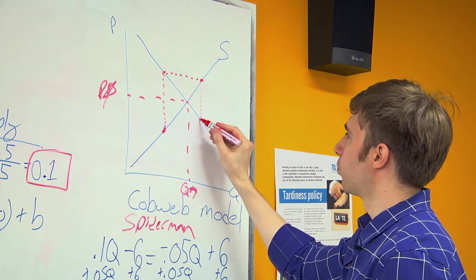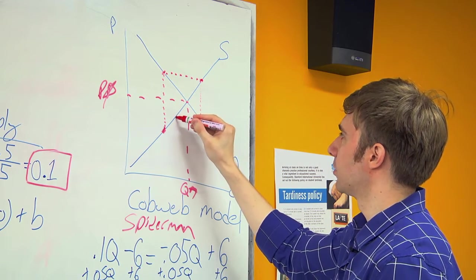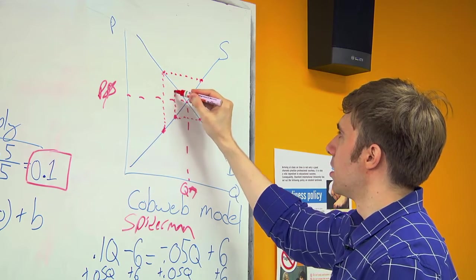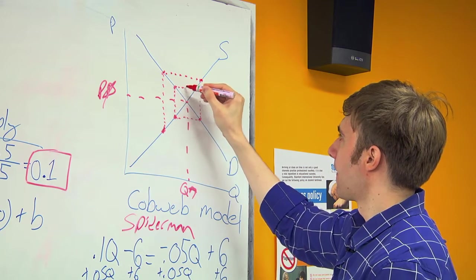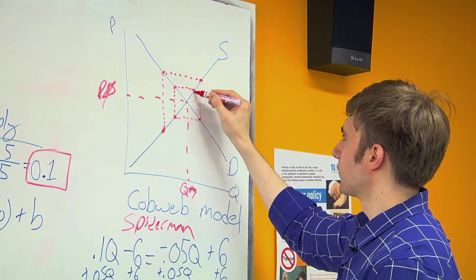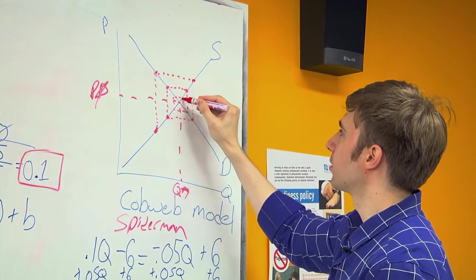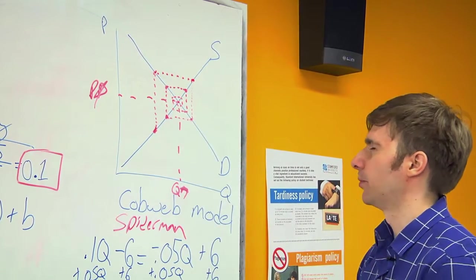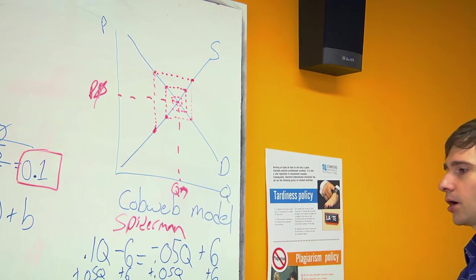So the cobweb model is just one season to the next. And we're getting closer and closer to our equilibrium. So that's how that cobweb model works.